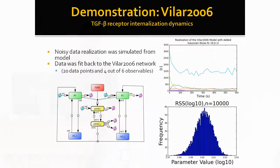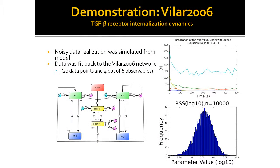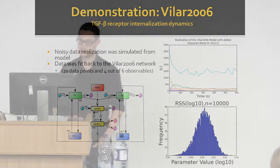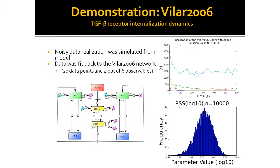To demonstrate, I'm going to use a published model from 2006 by Vidar et al. It's TGF-beta receptor internalization. TGF-beta binds to receptors, gets internalized and degraded — both constitutively and ligand-dependently by SMAD7 — and we also have receptor recycling back to the cell surface. I simulated some data using COPASI from the model, added some noise using Python, then fit the model back to the network. Here we have the residual sum of squares objective function for 10,000 runs, and that's actually a very good distribution — normally they don't look like that.